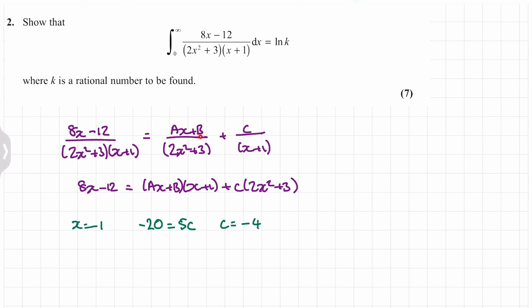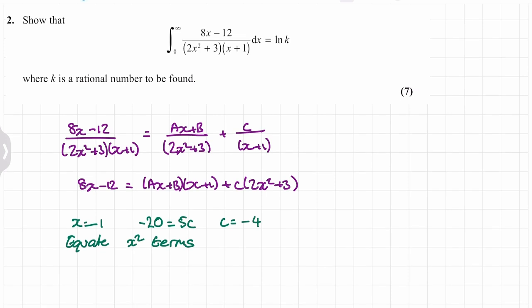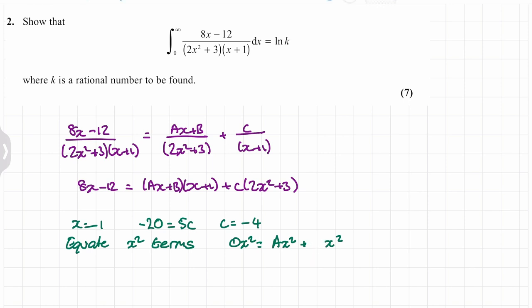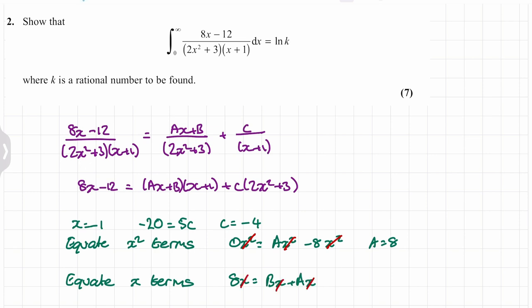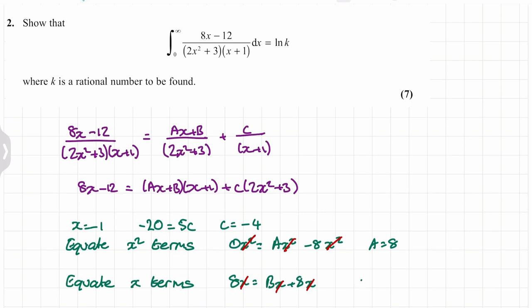To work out A and B, we equate coefficients. Looking at the x² coefficients: 0 = A + 2C. Since C = -4, this gives 0 = A - 8, so A = 8. Now equating x coefficients: 8 = B + A. Since A = 8, B must equal 0.